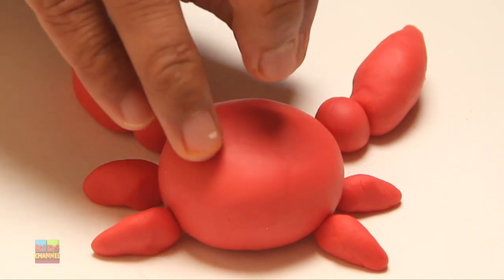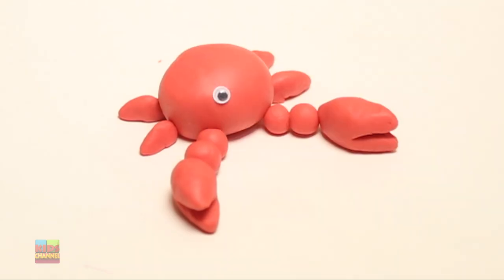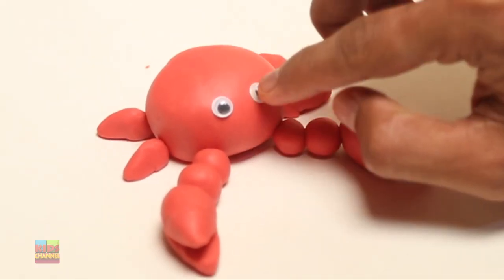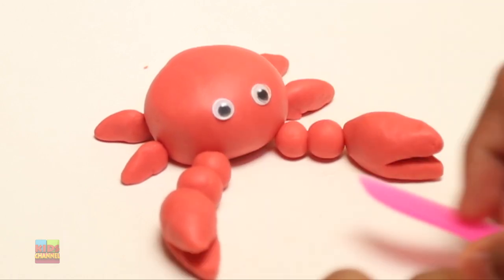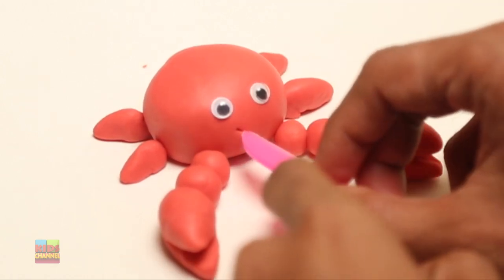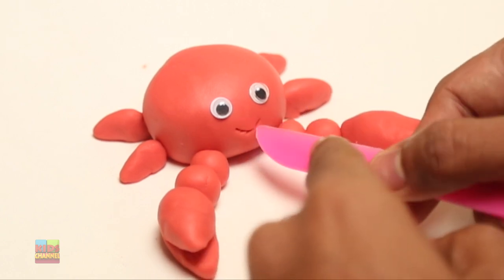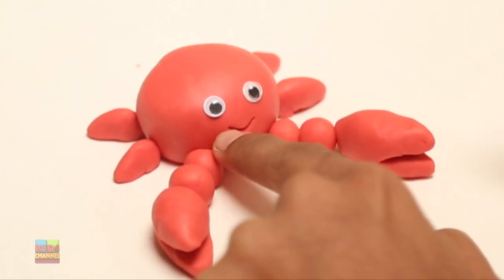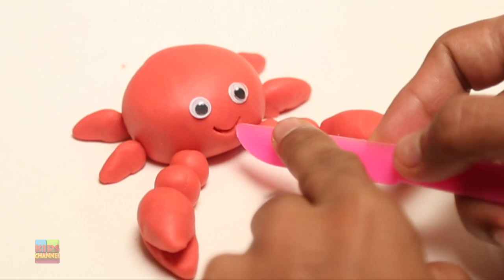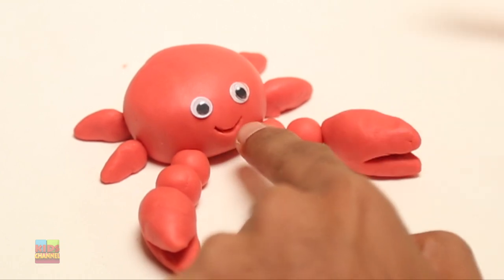Let's add some googly eyes right to the front of our red Play-Doh crab. Just like so. Terrific. Now using the Play-Doh knife, let's make this a happy crab. You can just make a little incision and that's it. There you go.